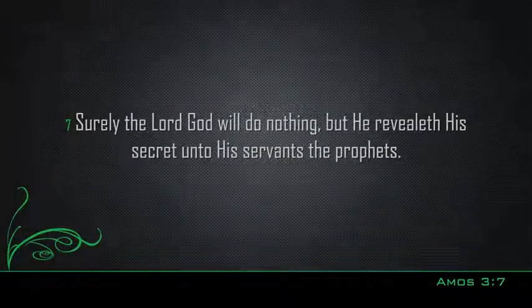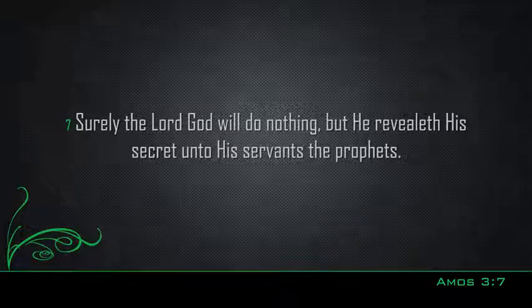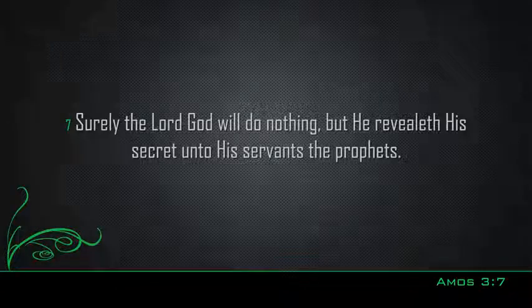But notice this verse here in Amos chapter 3, verse 7. Surely, the Lord God will do nothing, but he revealeth his secret unto his servants, the prophets. This verse tells us that God will do nothing without first revealing it to the prophets. In other words, in the writings of the prophets, he shows us what he is doing. And so, we read previously that the Father showed his Son what he was doing. Where? In the Word.